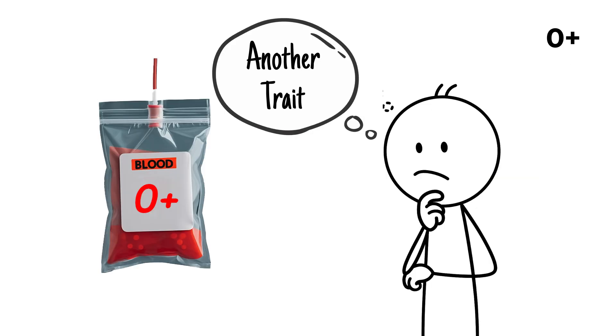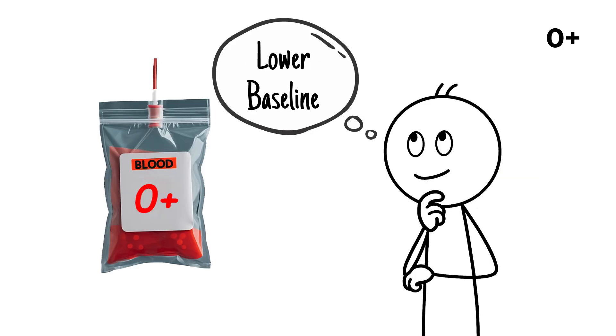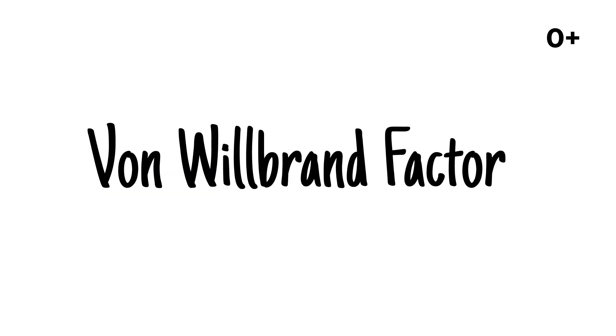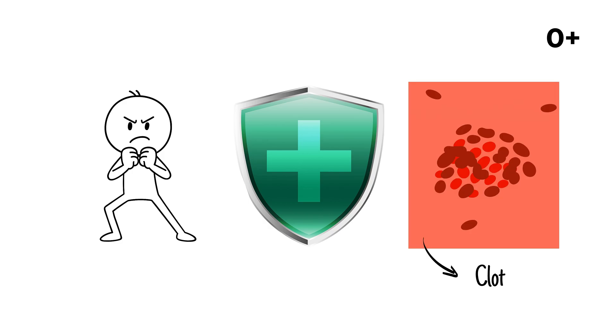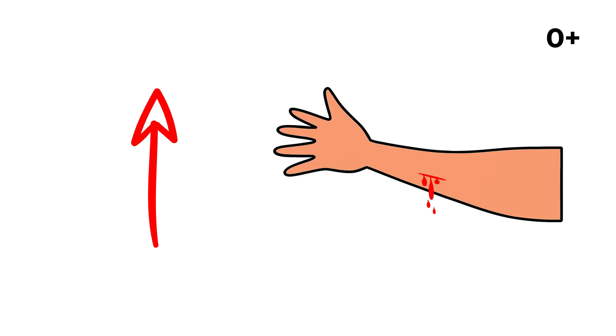Another trait of type O is that they usually have lower baseline levels of certain clotting factors, such as von Willebrand factor. This difference offers protection against life-threatening blood clots but can also increase bleeding risk in some situations.